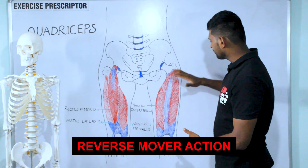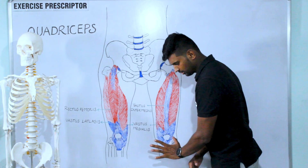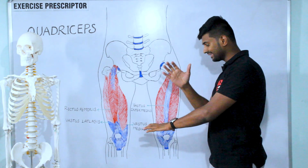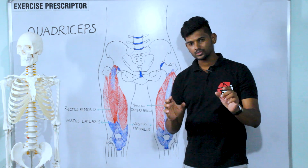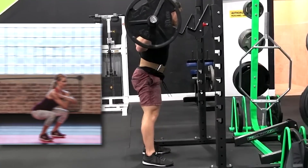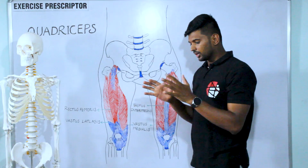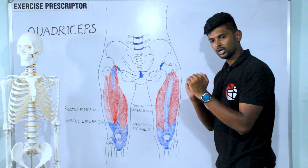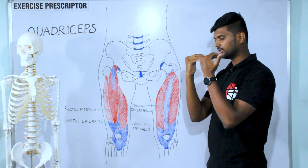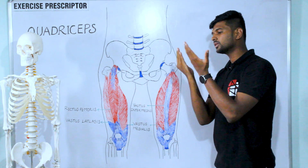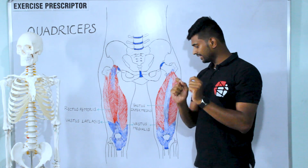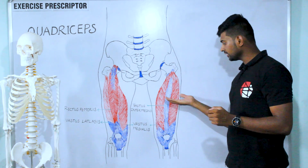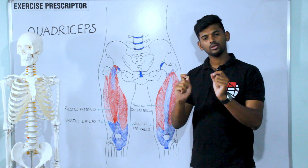In reverse mover action, the origin moves towards the insertion while the insertion is fixed. The muscle fiber is pulled in this way, helping to extend the thigh at the knee joint. This is the frequent action we use in sit-to-stand or squat. During a squat or sit-to-stand, our distal attachment is fixed — the tibial attachment is not moving. Our thigh is moving towards the distal attachment; the proximal attachment is moving towards the distal attachment. So, standard mover action is extending the knee joint, and reverse mover action is extending the thigh at the knee joint, as in squat or sit-to-stand.